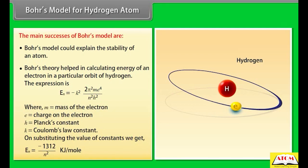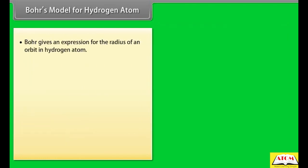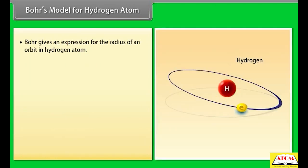On substituting the values of constants, we get Eₙ = −1312/n² kilojoules per mole. Bohr also gives an expression for the radius of an orbit in hydrogen atom: Rₙ = n²h² / (4π²kme²).